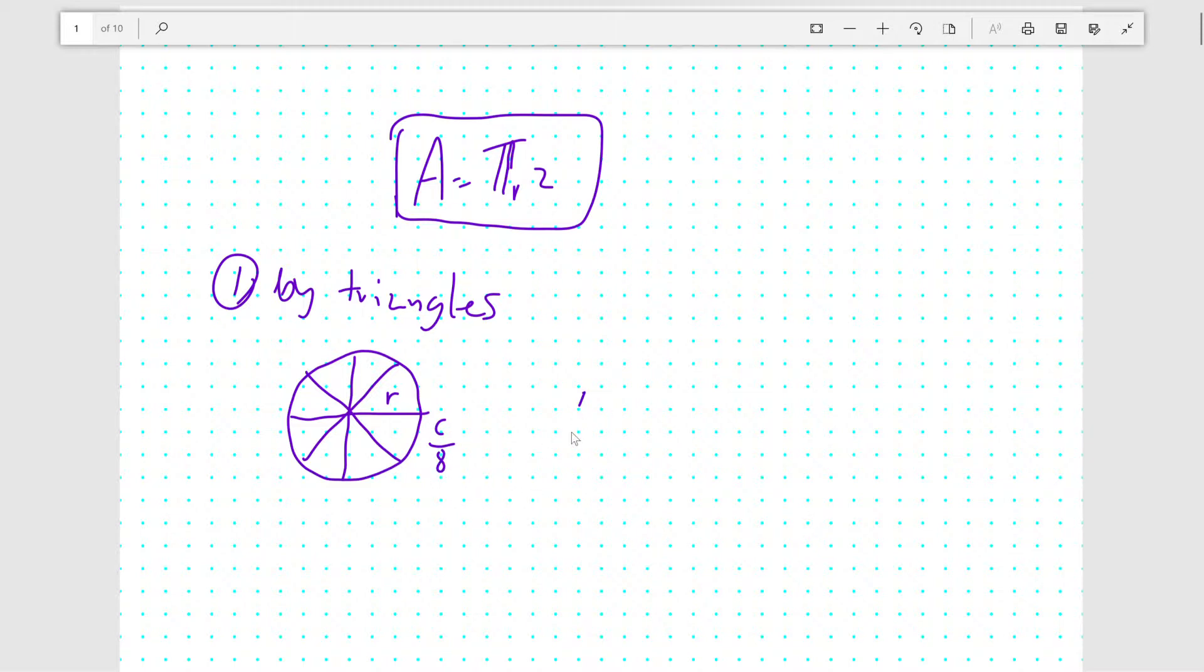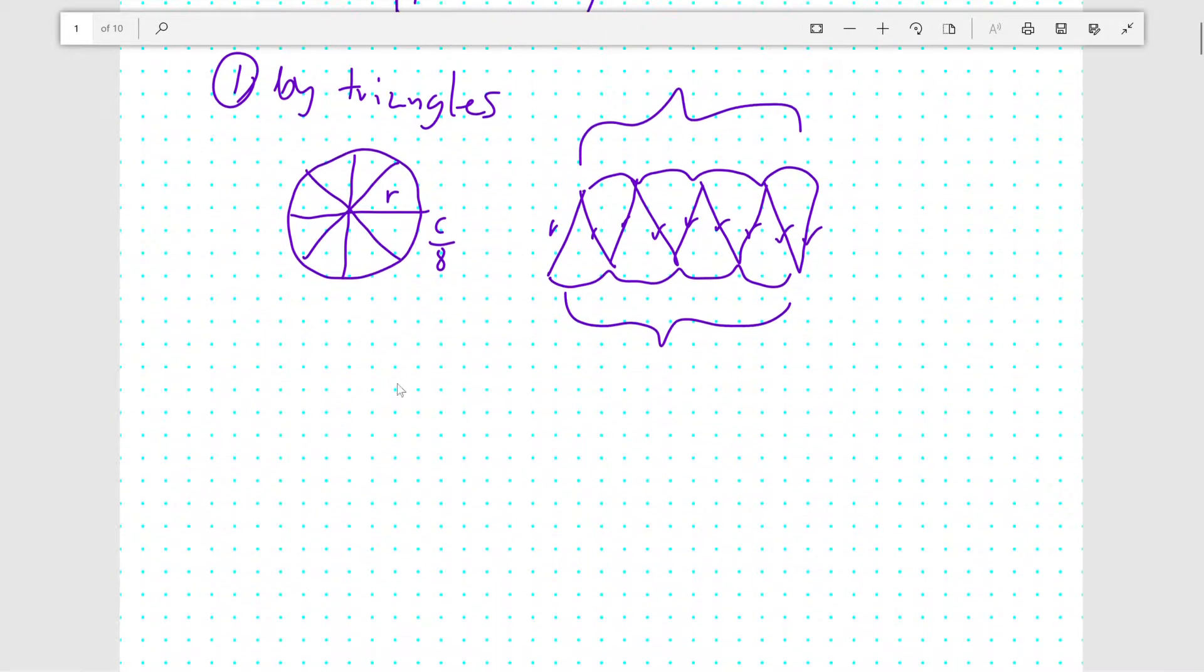It'll look something like this when I mean arranging the pieces into a parallelogram. Every line here has the length r and all the bases here are of equal length. The top is equal length to the bottom and they add up to the circumference. However, this is obviously not a parallelogram and it doesn't help us.